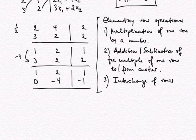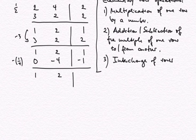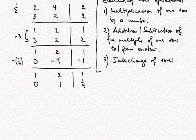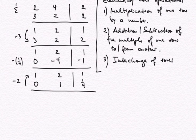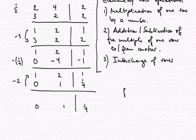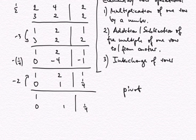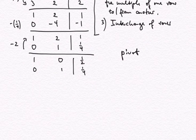Now I subtract two times the second row from the first — the second row is the pivotal row. So: 1 minus 2 times 0 is 1; 2 minus 2 times 1 is 0; 1 minus 2 times one quarter is one half. What we have here: interpreting this scheme as a matrix product, the original system was 2x1 plus 4x2 equals 2 and 3x1 plus 2x2 equals 2.